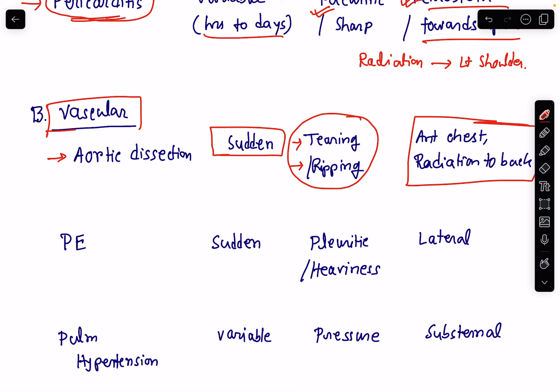These are the characteristics of aortic dissection chest pain. Usually, aortic dissection is associated with patients of hypertension, so we need to remember this.